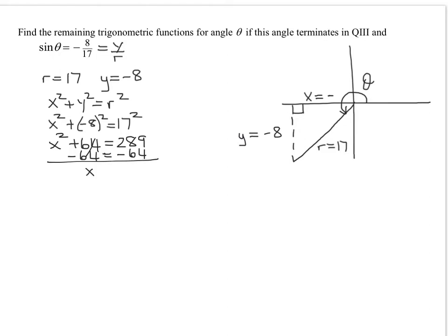And I get x squared equals 225. So x is, now remember, looking at the picture, x has to be a negative number since I'm over here in quadrant 3. So x is the negative square root of 225. So x is going to be negative 15.